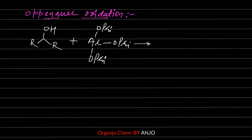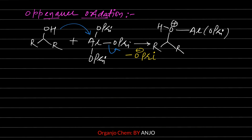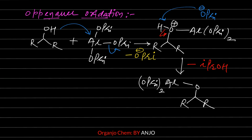Now let's discuss the mechanism of Oppenauer Oxidation. In the first step, the alcohol reacts with aluminum isopropoxide. As the oxygen of the alcohol donates electrons, an aluminum-oxygen bond breaks and a propoxide molecule leaves as a leaving group. Since oxygen donates electrons, a positive charge forms on this oxygen.